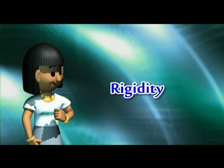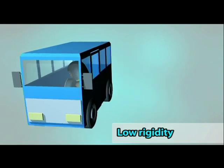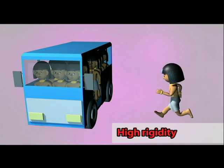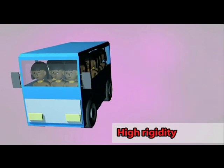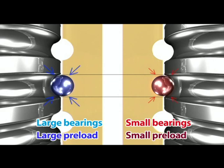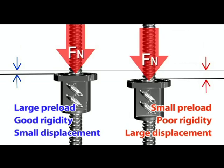Rigidity. When a person leaps onto an empty bus, the bus will experience severe rocking. In contrast, when a person leaps onto another bus that already contains 30 passengers, the bus will not rock much at all. The use of slightly larger bearings in a ball screw will create preload, ensuring greater rigidity. Smaller bearings will reduce preload and rigidity will also decrease. When ball screws are subject to the same external force Fn, the relative displacement of the nut and screw in the ball screw with greater rigidity is relatively small, while relative displacement in the ball screw with less rigidity is relatively large.